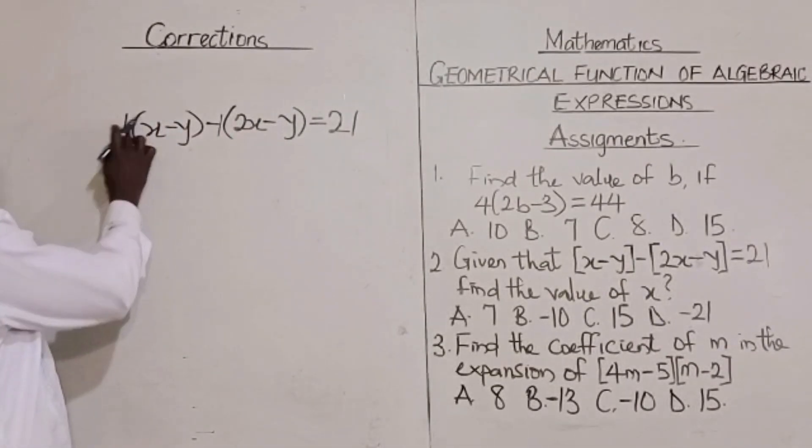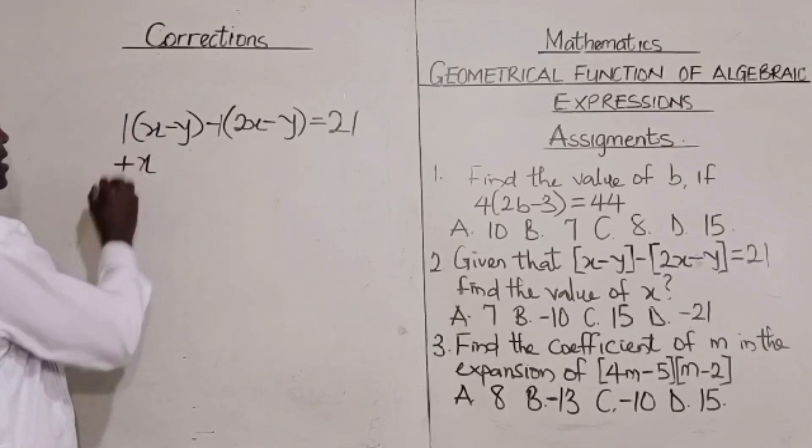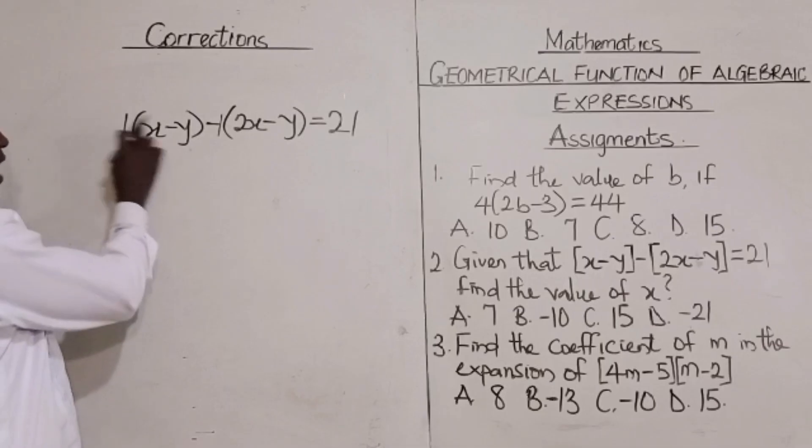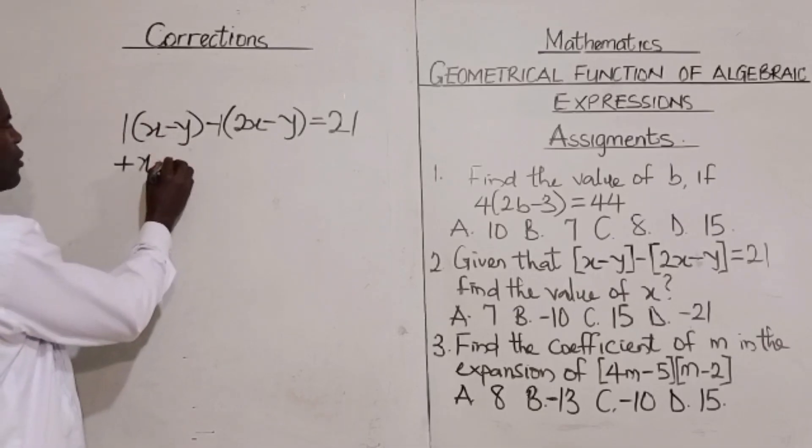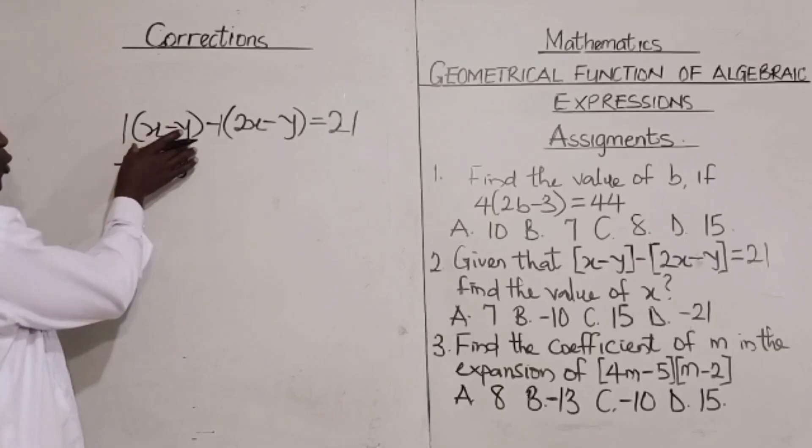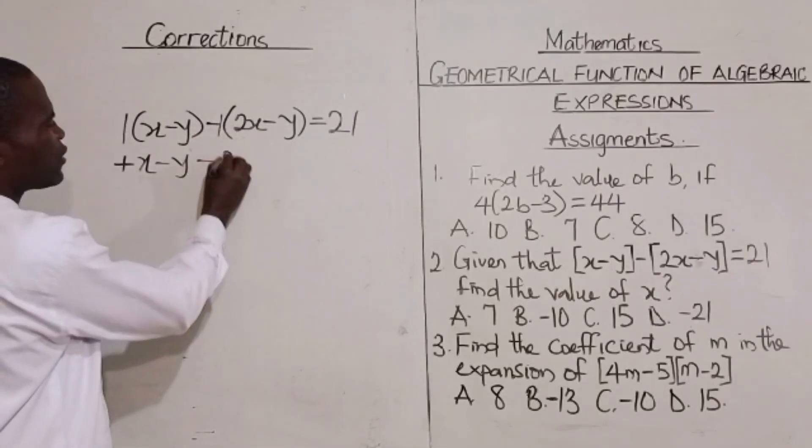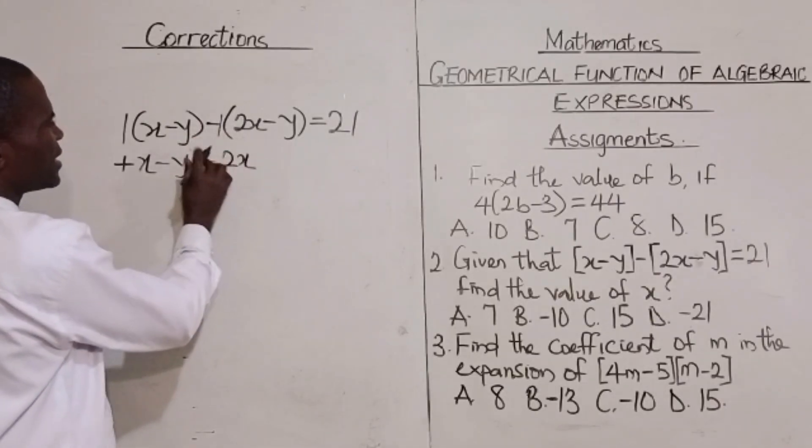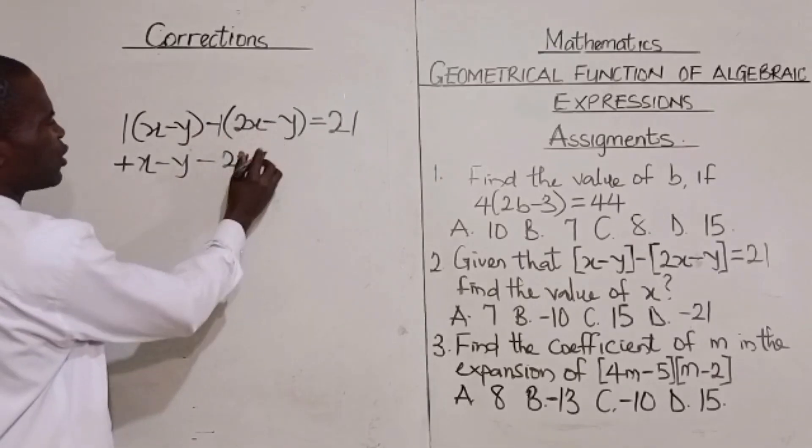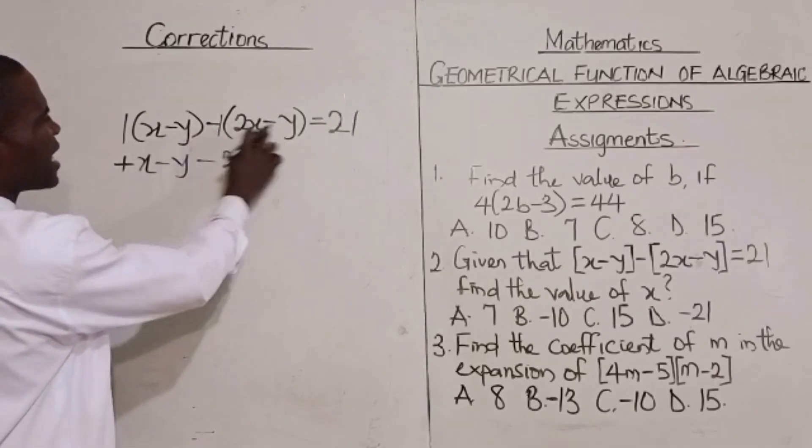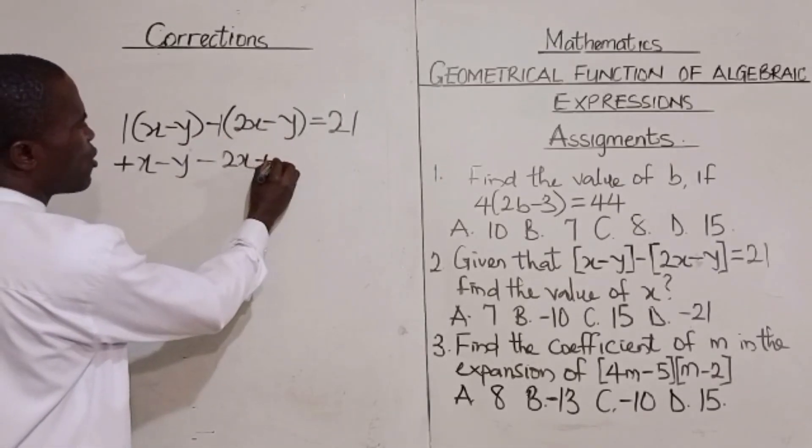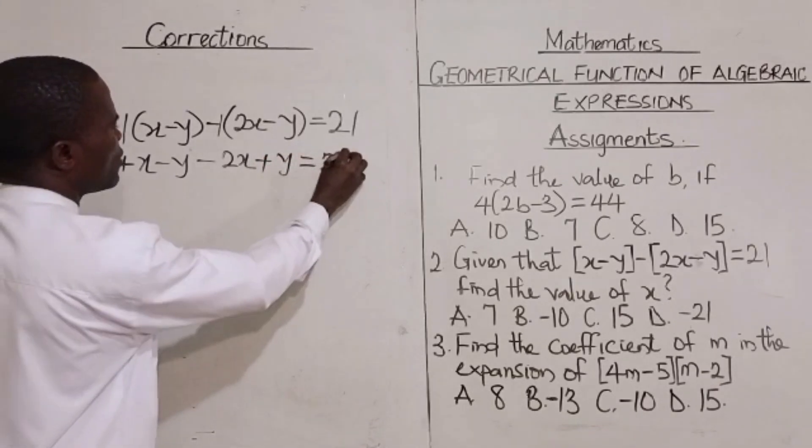Plus times plus, that is going to give us plus. One times x gives us x. Then plus times minus, that gives us minus. One times y gives us y. Then, we are done with the first room. Now, let us put minus. One times 2x gives us 2x. Then minus times minus gives us plus. One times y gives us y. It's equal to 21.